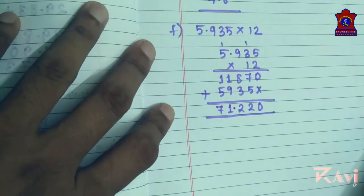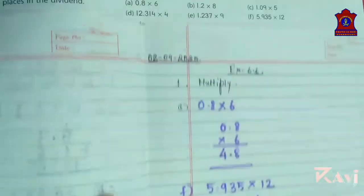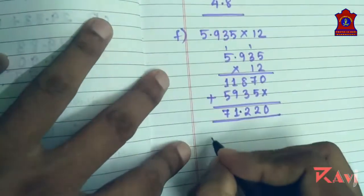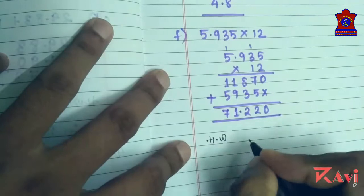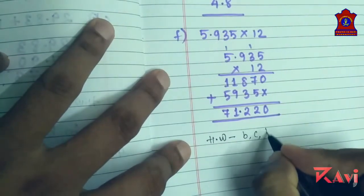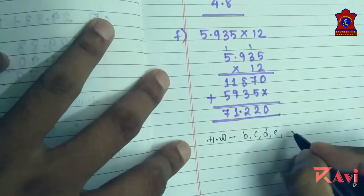Seventy one point two two zero is the answer. Like this you have to multiply rest of all questions. So rest of all question you have to do by yourself: b, c, e, g. Here you have to do by yourself.